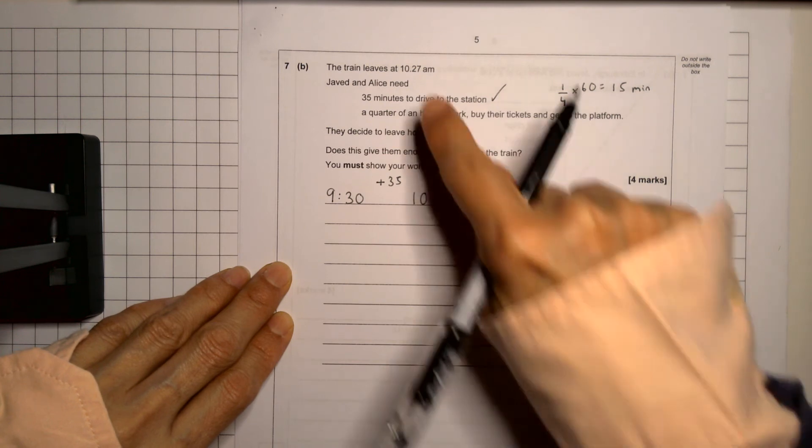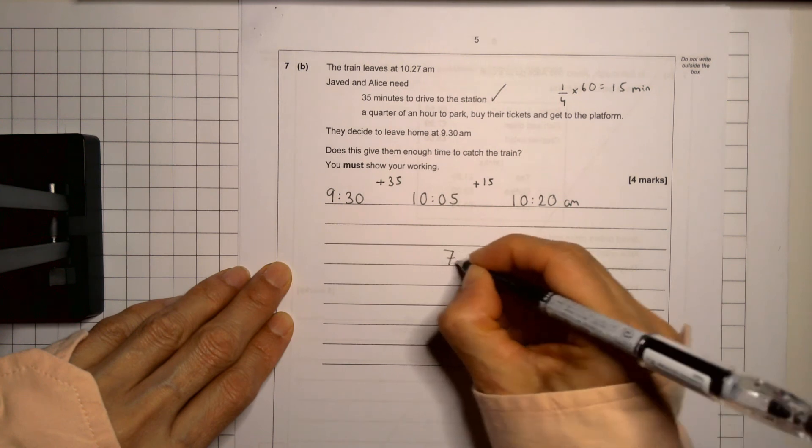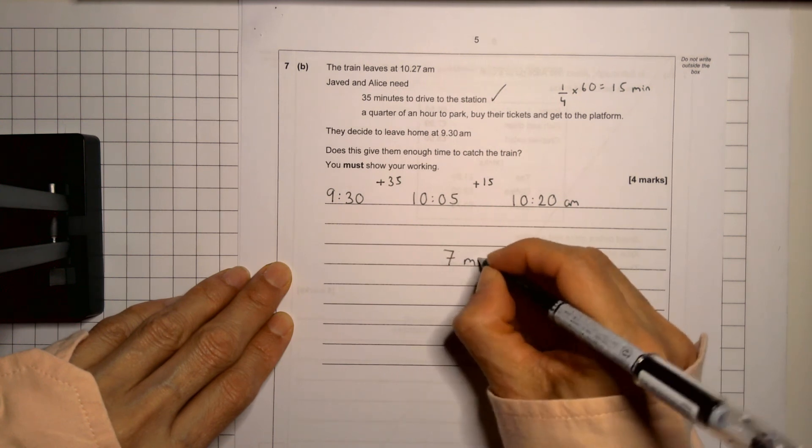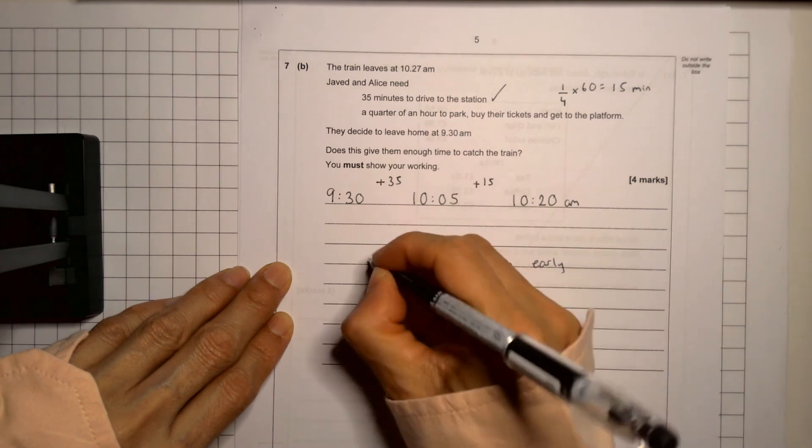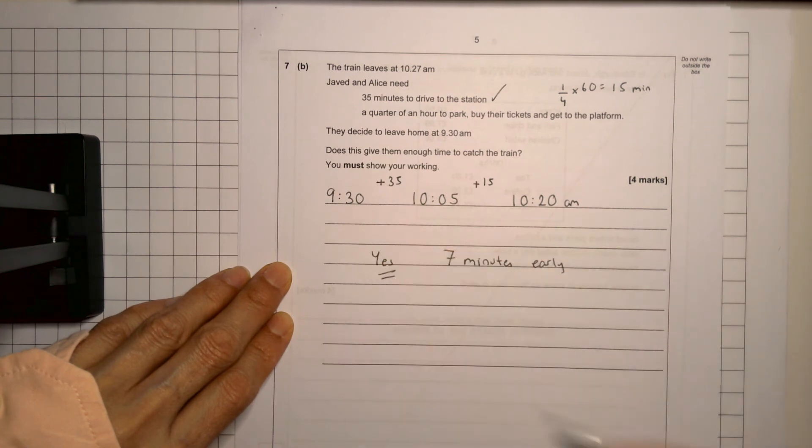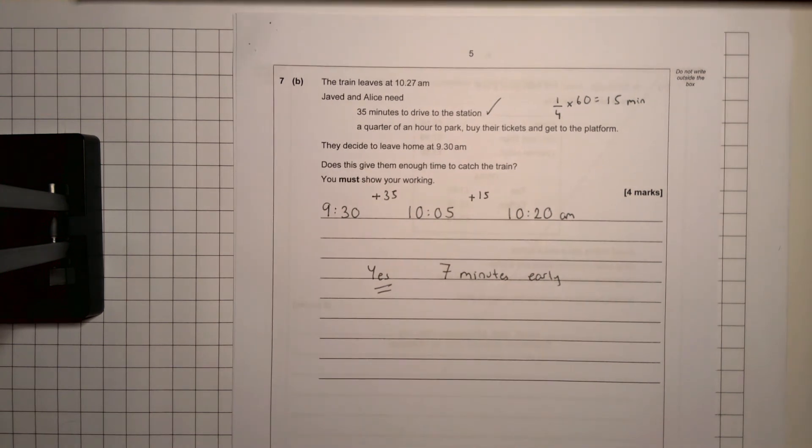So that's the time they would be ready. And the question is, was it in plenty of time? Yes, it is because they have seven minutes. There'll be seven minutes early. So the answer is yes. They have seven minutes. Good. Four marks for that. That one you just have to be careful. It's very easy to make a little mistake, but it's not a bad question.